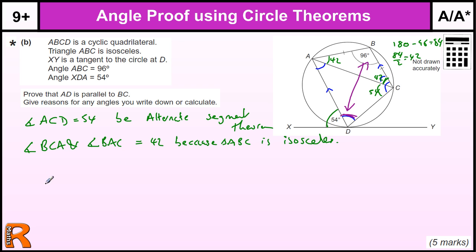Okay, so angle ADC equals 180 minus 96, which is 84, because ABCD is a cyclic quadrilateral.